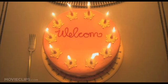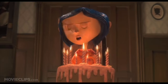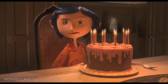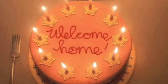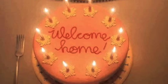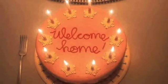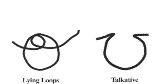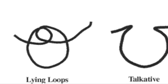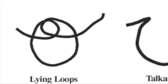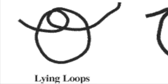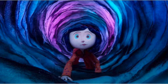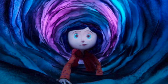Another scene that stresses the structuralist film theory lens is where the other mother gives Coraline a cake upon her arrival in the other world. The words on the cake read 'welcome home' in cursive. However, if observed closely, the letter O has two circles in it. According to graphology, a double loop on a lowercase O means the person who wrote it is lying. There is one double loop only in the word 'home,' meaning she is welcome, but she isn't home.